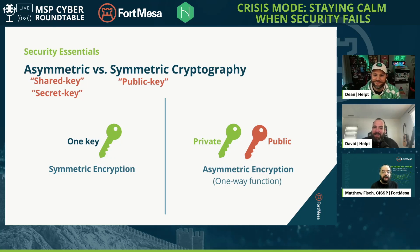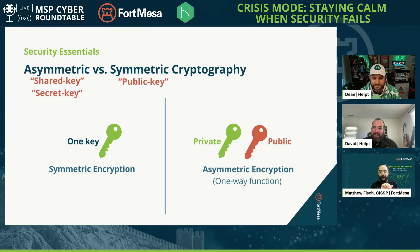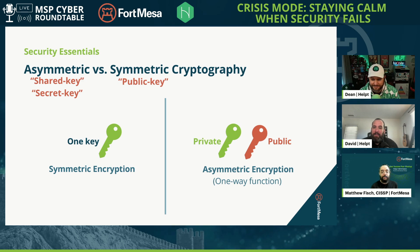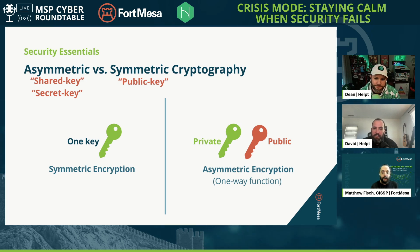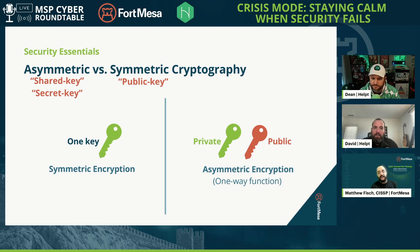Asymmetric versus symmetric — symmetric always has one key, and asymmetric has two keys. That sounds boring, and it sort of is, unless you're a crypto geek.